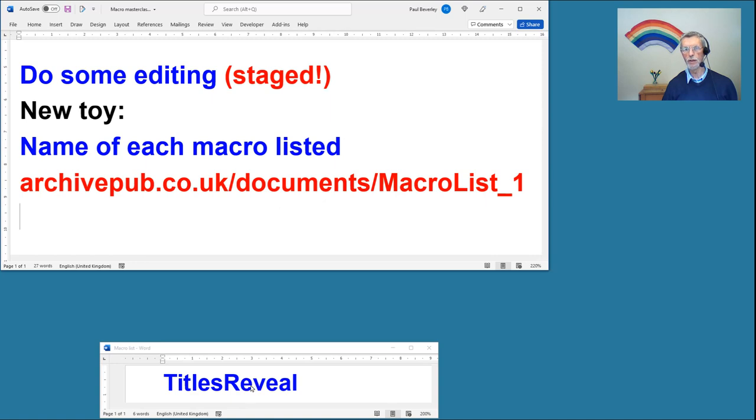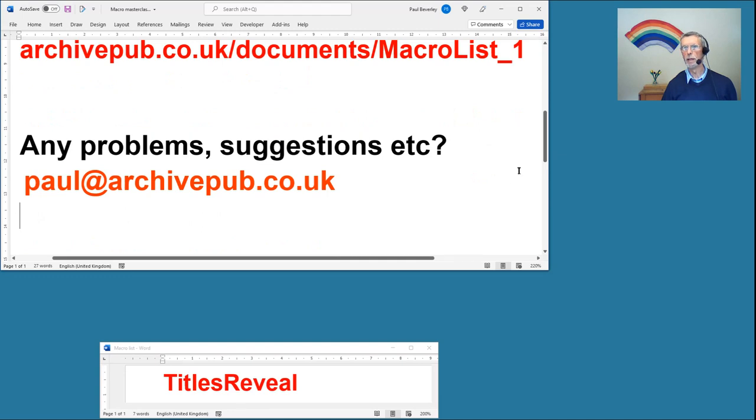So what I'm going to do is put the list of macros that you see operated onto a file in my documents directory, so you can have a look at that if you want to see which macros might be useful to you.